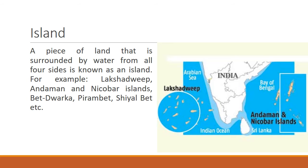Next is island. A piece of land that is surrounded by water from all four sides is known as an island. For example, Lakshadweep, Andaman and Nicobar Islands, Beth Dwarka, Piram Beth, Shial Beth, etc. The word 'dweep' means island, and 'beth' also means island or 'tapu' — a small piece of land surrounded by water from all four sides. In the image, Lakshadweep and Andaman and Nicobar Islands have been shown.